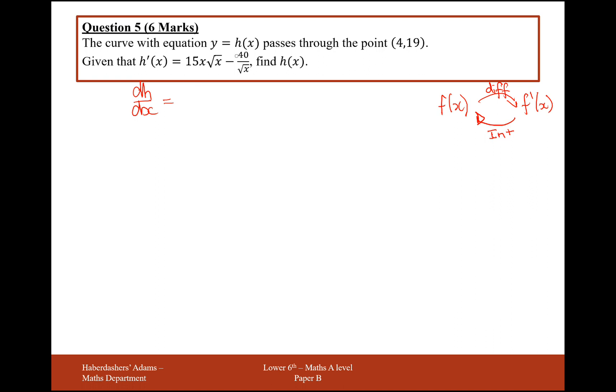So what we need to do first is we need to get these surd forms into an expression that we can integrate. So x times the square root of x, what we have to do with this is we have to treat this as x to the 1 times x to the half, a power of a half referring to a square root, and then we can add the powers together. So the first one is going to be x to the power of 3 over 2.